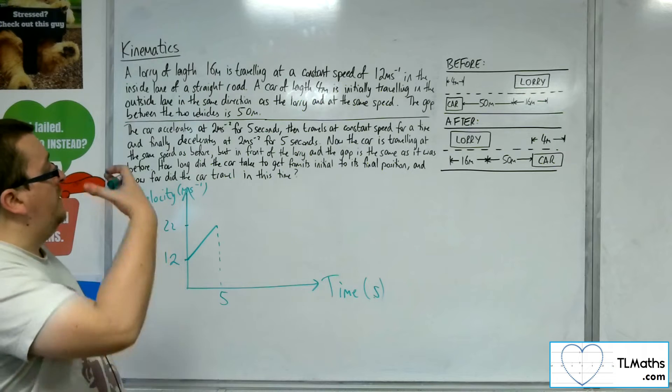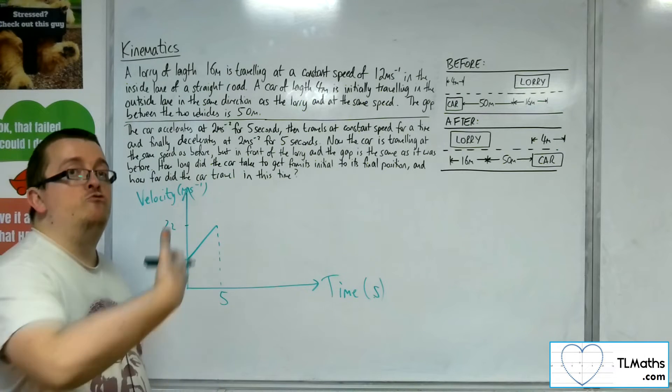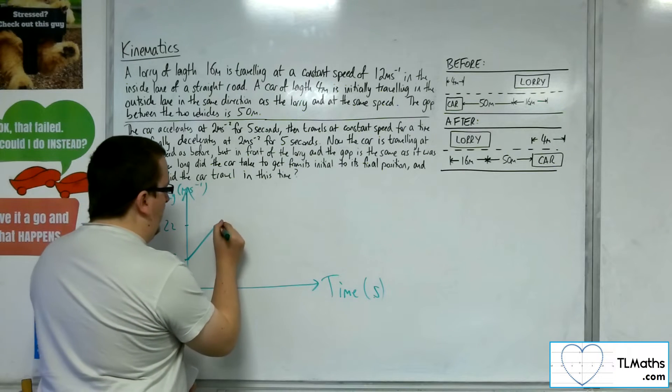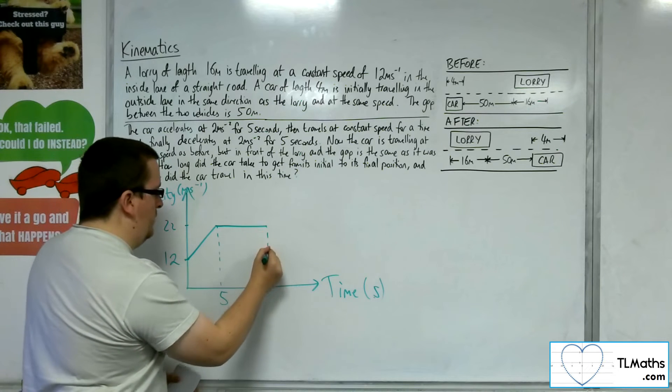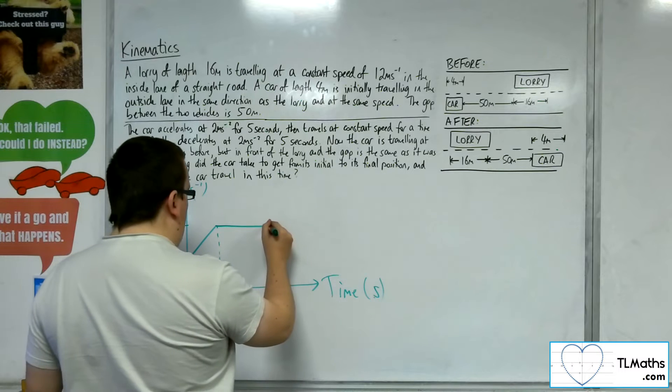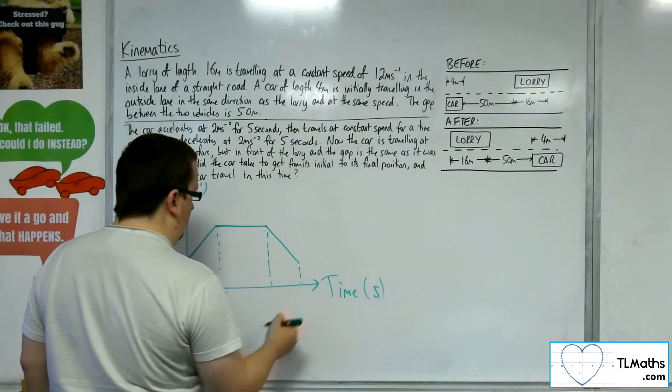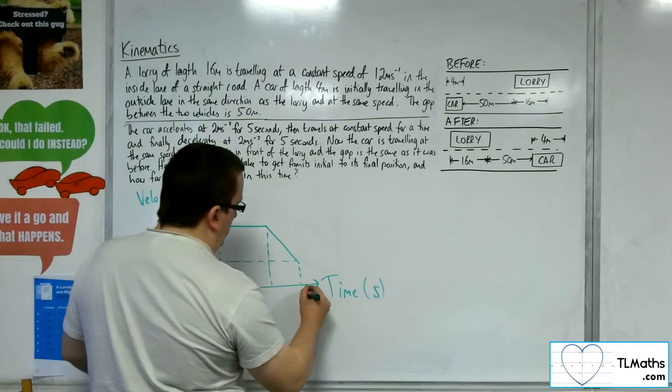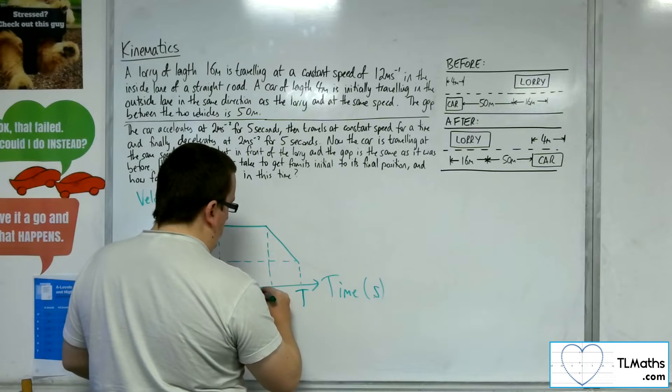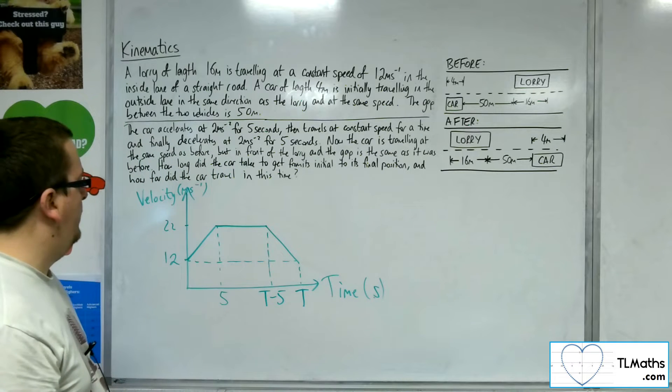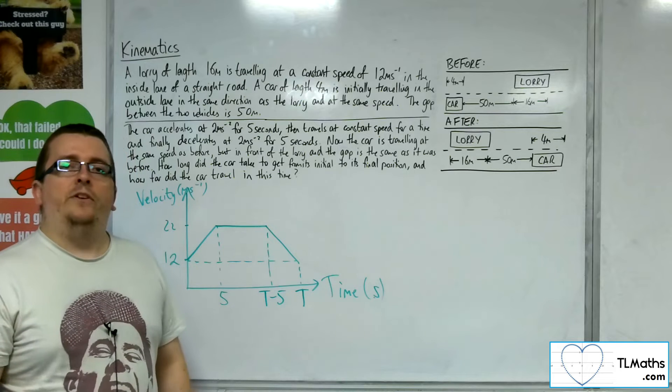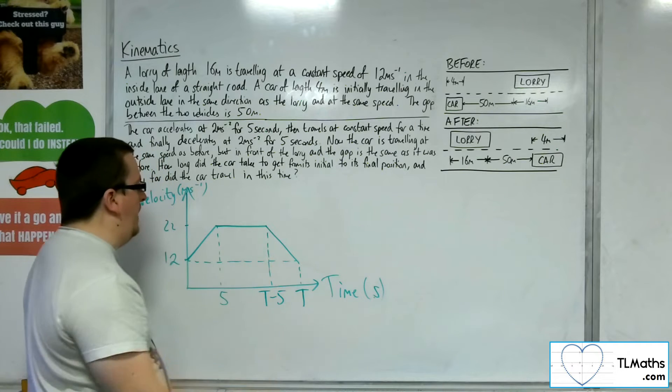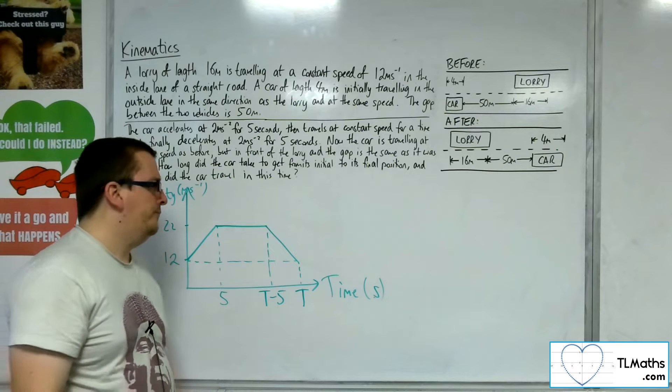It's increasing in speed by 2 metres per second every second, so it's increased by 10. Then it travels at this constant speed for a certain amount of time. We don't know what that time is, but then it decelerates down for 5 seconds, until it hits the 12 metres per second again. If I call this time capital T, then this time will be T minus 5. So this is the diagram that we have, this shows you the travel of the car. The lorry is effectively just keeping at the same speed all the way through this process.